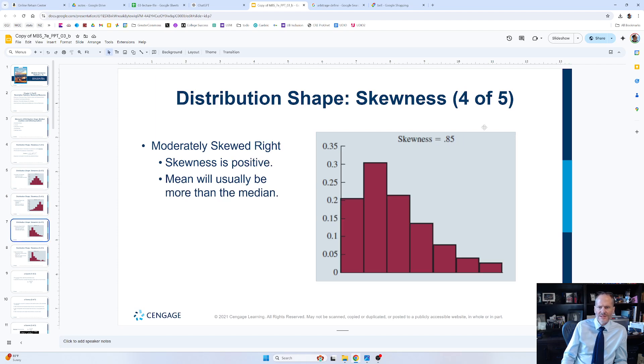And then here skewness is 8.5. And in this case, the mean will be more than the median. So if you kind of just think about that, like the median is the middle of the data.